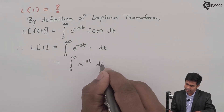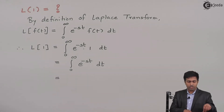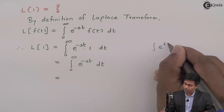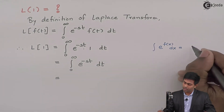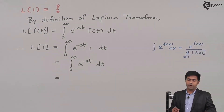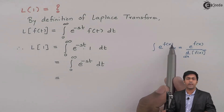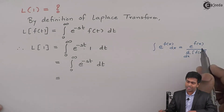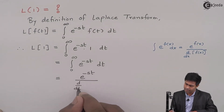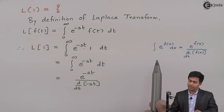Now let's integrate e raised to minus st with respect to t. We know that the integration of e raised to f(x) is given by: e raised to f(x) upon the derivative of f(x). If I compare this step with the formula, then here f(t) is minus st. Using the formula, I will get e raised to minus st upon d/dt of minus st.